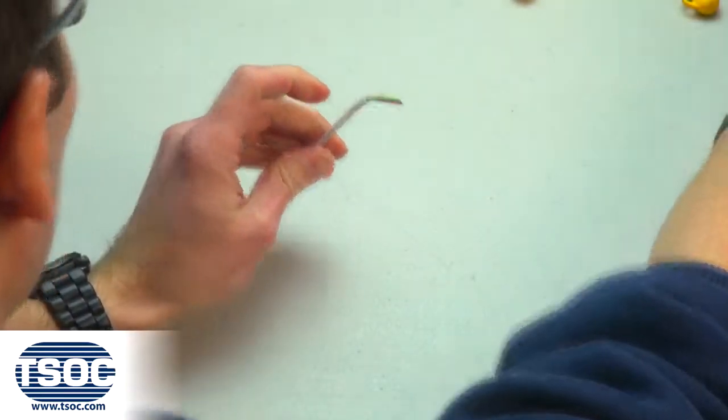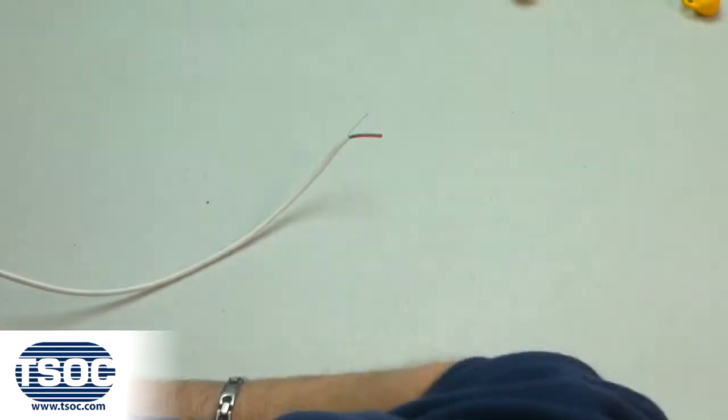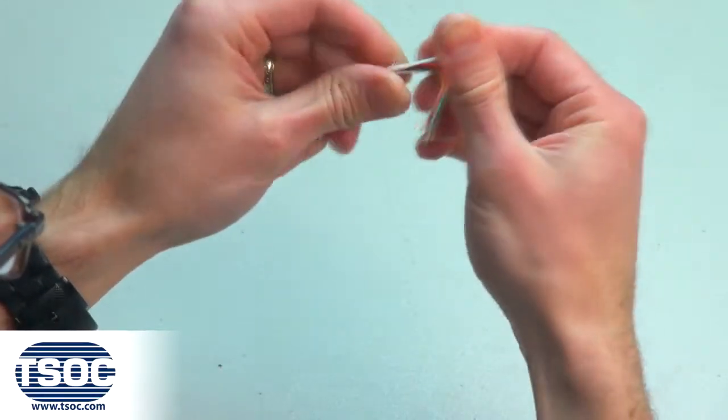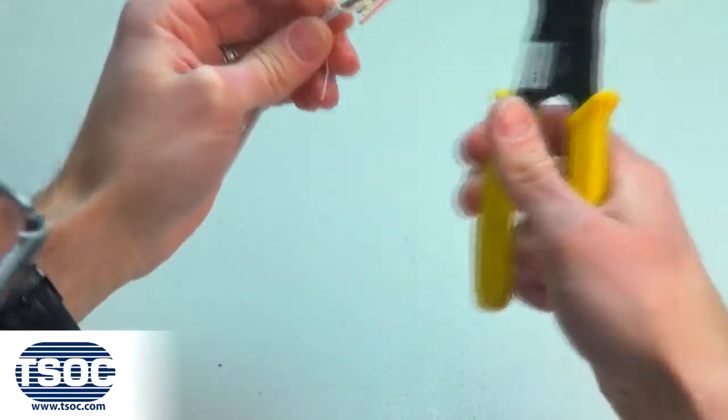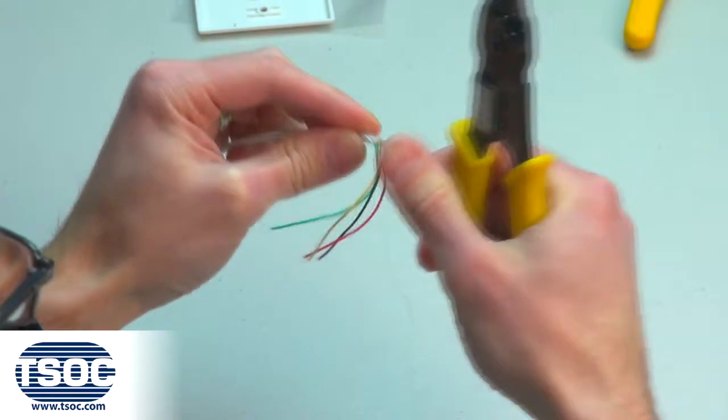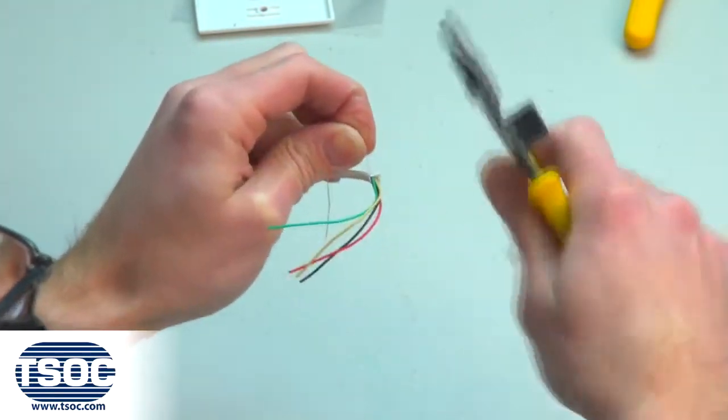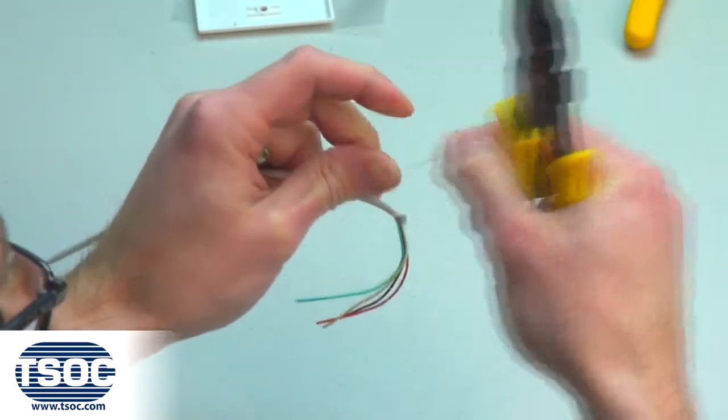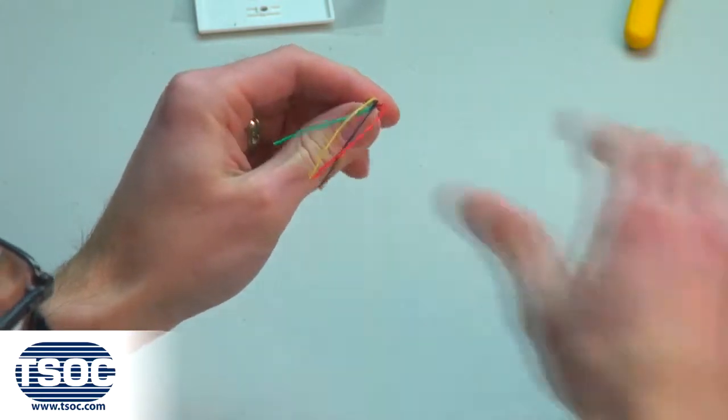Use the needle nose pliers and pull string to expose the required length of wire. Remove the cable jacket and pull string using the cable prep tool. Step 3: Remove the tips of the insulated conductors to the required length using the wire stripper.